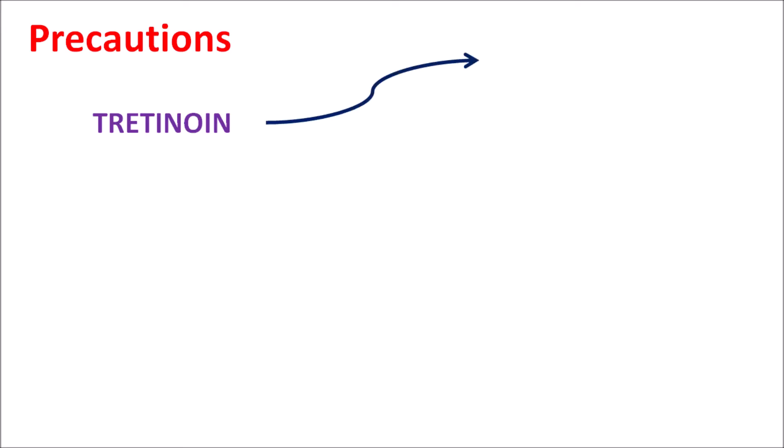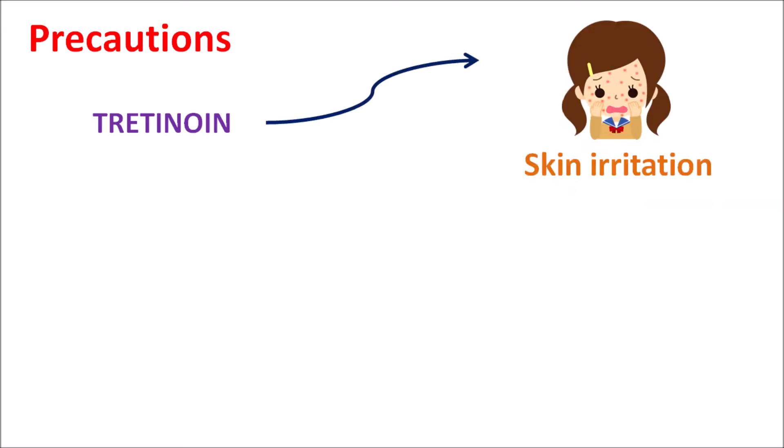One of the important precautions of Tretinoin is that when applied on the skin, it can produce some local skin irritation, which is important because it can reduce patient compliance. When Tretinoin is indicated for the treatment of acne, in the early few weeks of treatment, the severity of the acne may appear increased because of skin eruptions, detachment of cornified epithelial cells, and shedding of keratinocytes. Initially, reddening of the skin may increase, skin irritation increases, and dryness of the skin can be observed, which may resemble an increase in acne formation. But these symptoms are associated with the actions of Tretinoin, which reduces acne proliferation when used long-term. This skin irritation is one of the important precautions that should be considered.